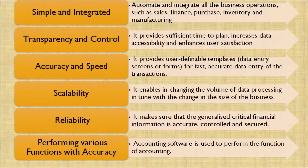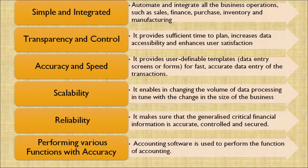What are the salient features of computer-aided systems? Number one: it is simple and integrated. Number two: transparency and control. Third: accuracy and speed. Fourth: scalability. Fifth: reliability. And last: performing various functions with accuracy. Let's now discuss each characteristic.